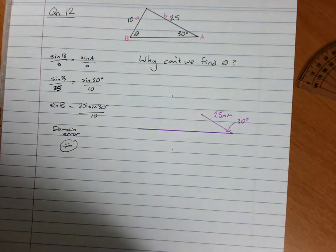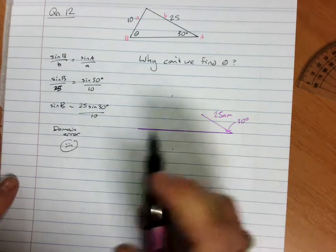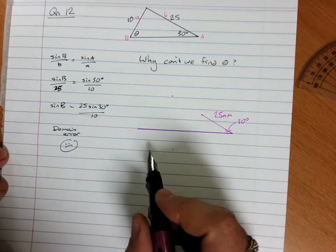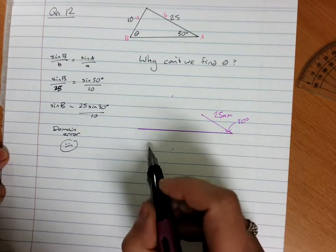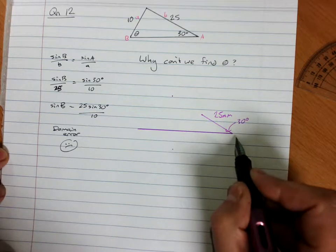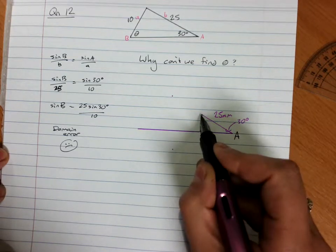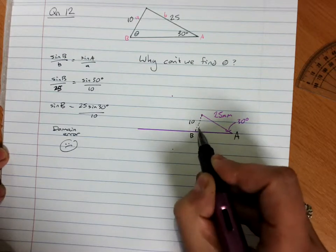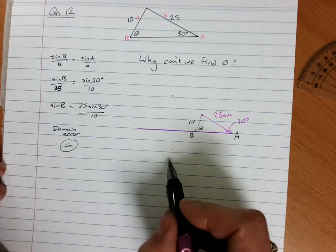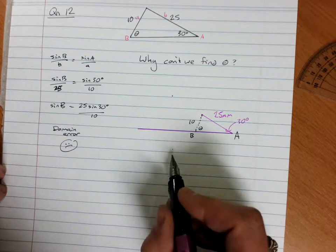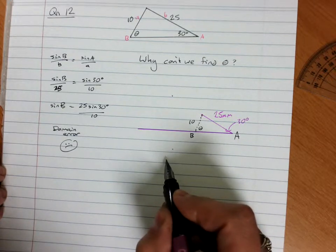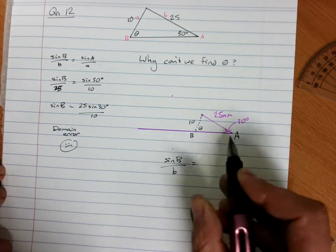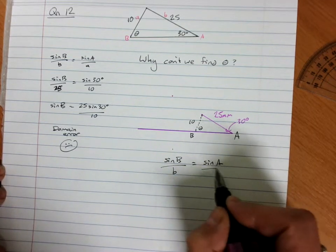If we want to work that through mathematically, so what have we got—we've got a 10, and that's angle B. Well, we're still back here at sine B on B equals sine A on A.